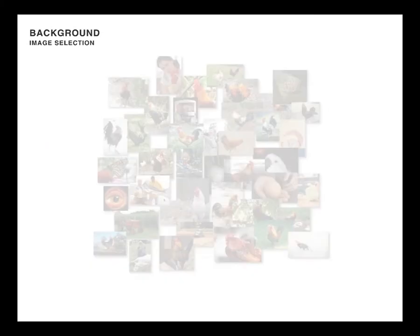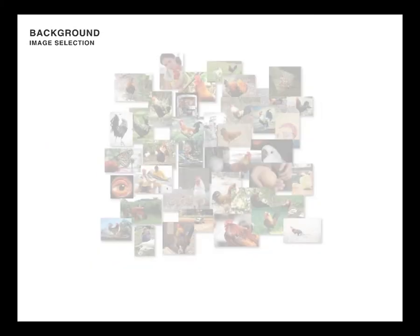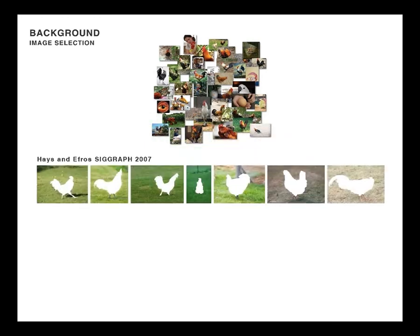For colorization of the background, we start with the same set of downloaded images as used for the foreground, since there is often strong correlation between the foreground and background components of a scene. These images are filtered using the GIST descriptor of Hayes and Ephros, which gives superior performance at finding background scenes semantically similar to the input.